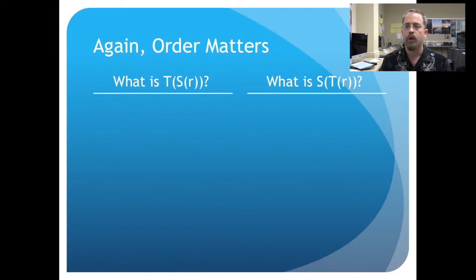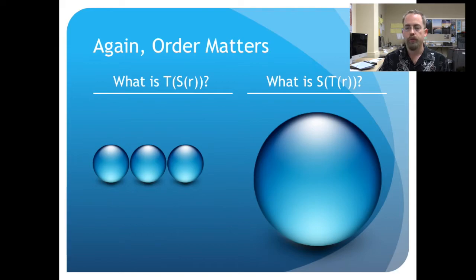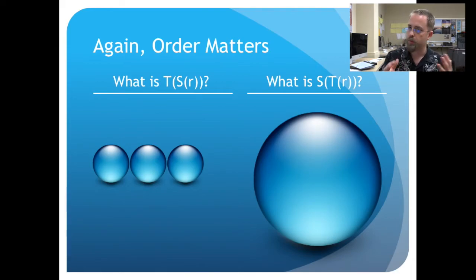So what is t of s of r? If we do the tripler on the sphericizer, what happens? We get three spheres because the first thing that happened was we made a sphere and then we tripled the spheres that we had. Versus if we do s of t of r, first we triple the radius and then we make a sphere out of that. These end up with very different results depending upon which order we take them in.